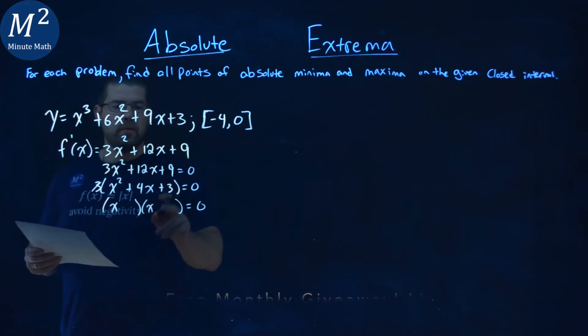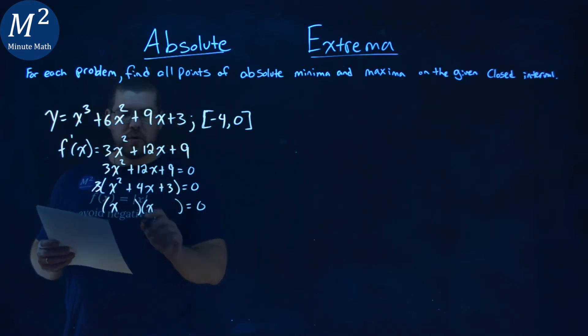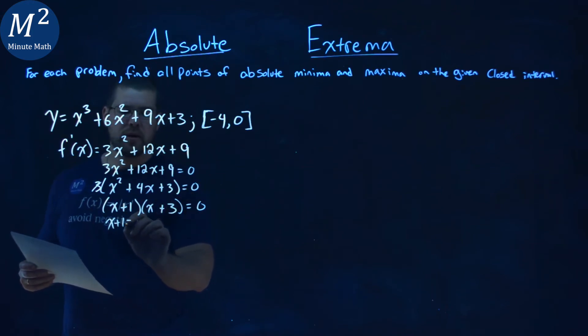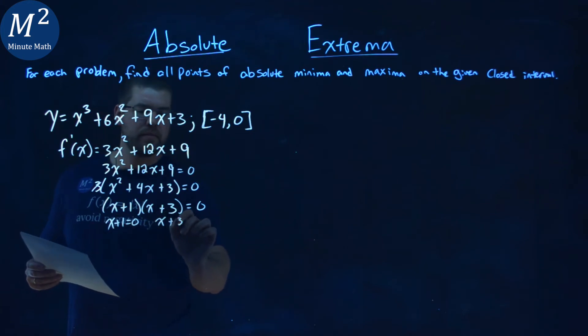We factor it here. Two numbers multiply by 3 but add to be 4, or a 1 and a 3 being positive. We set both of those equal to 0, x plus 1 equals 0, and solve. x equals negative 1, and x equals negative 3.